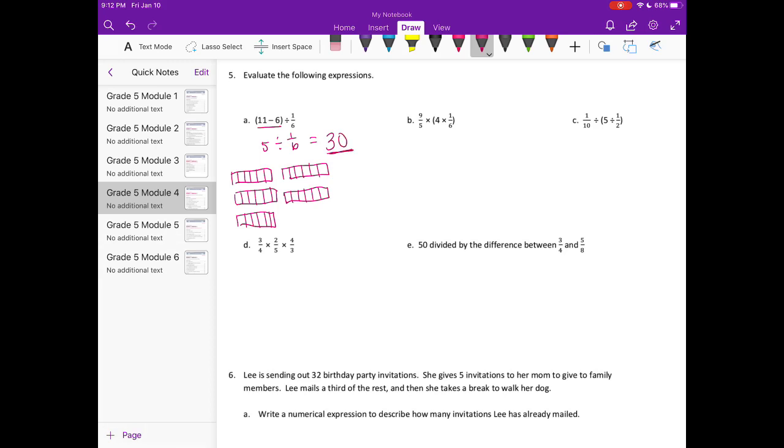B, 9 5ths times 4 times 1 6th. So let's start with what's in the parentheses. 4 times 1 6th, that would be equal to 4 times 1 over 6, or 4 6ths. So what we have is 9 5ths times 4 6ths. And there we can just multiply and get 9 times 4 is 36, 5 times 6 is 30. So we get 1 and 6 thirtieths, which is equal to 1 and 1 fifth.